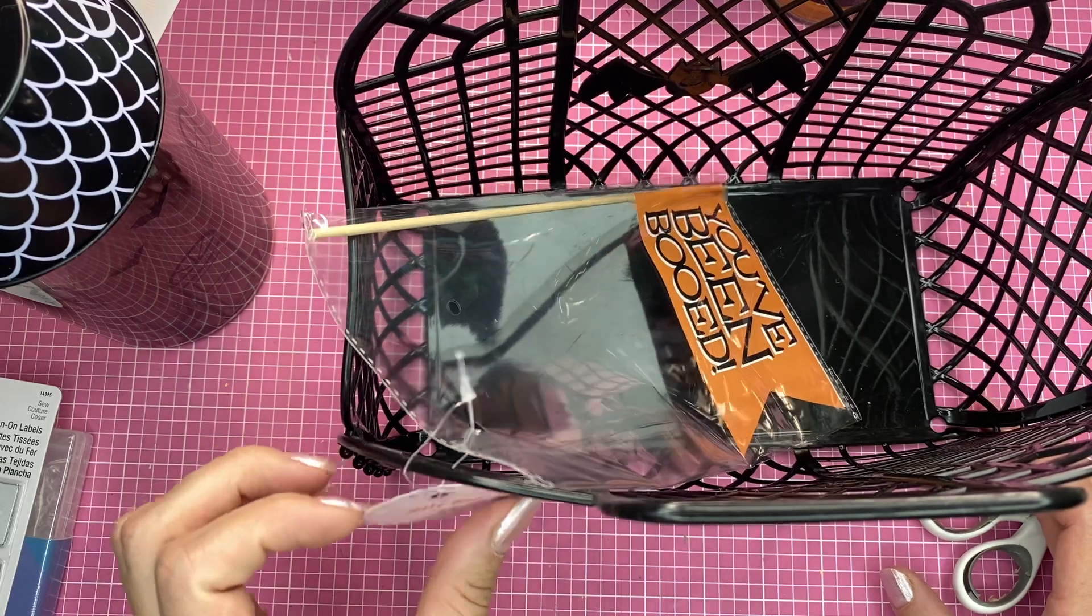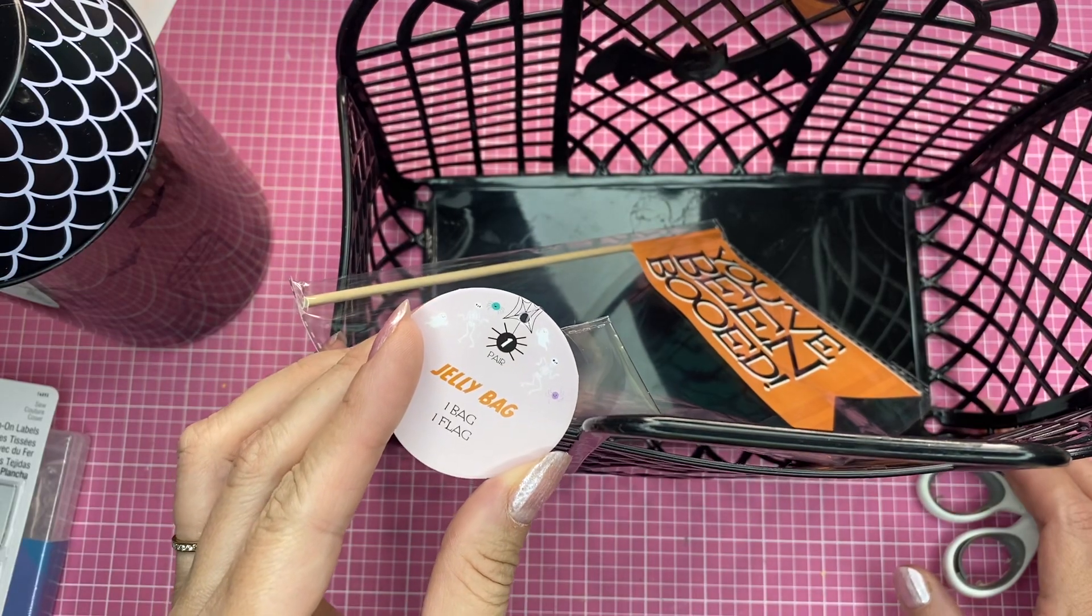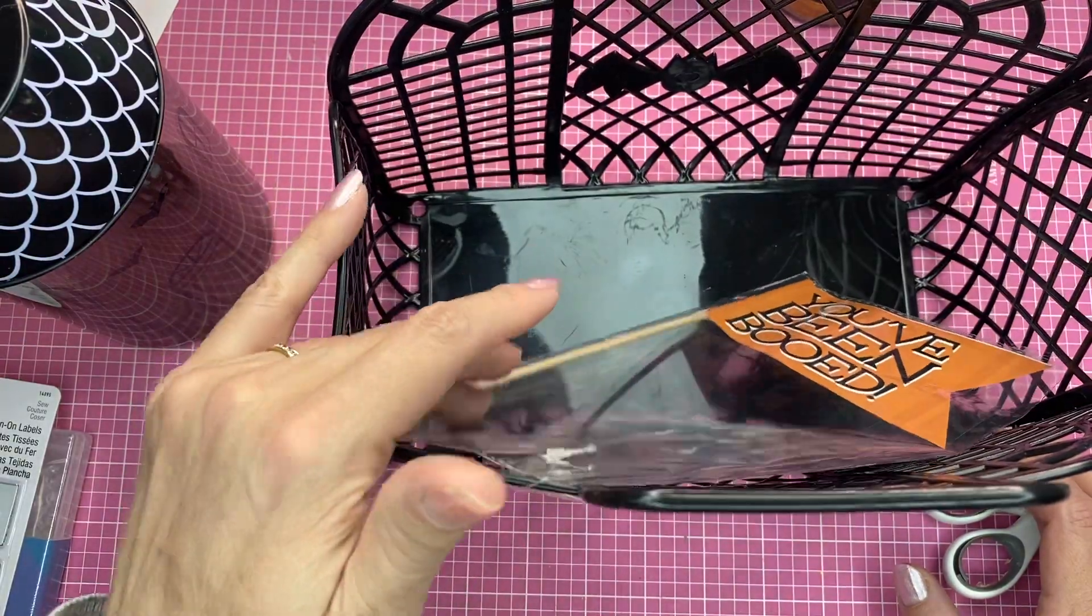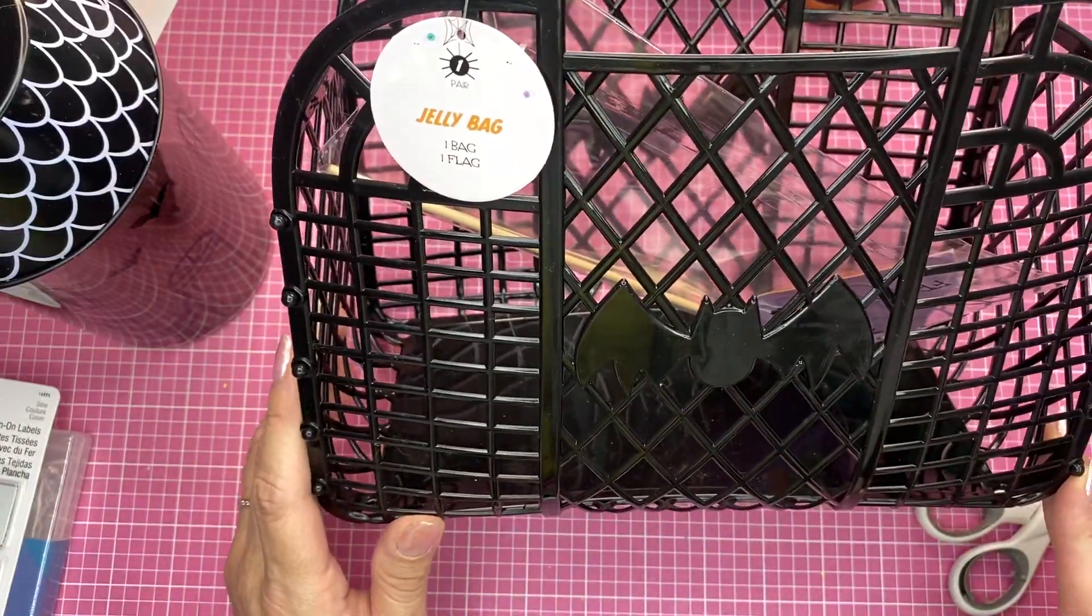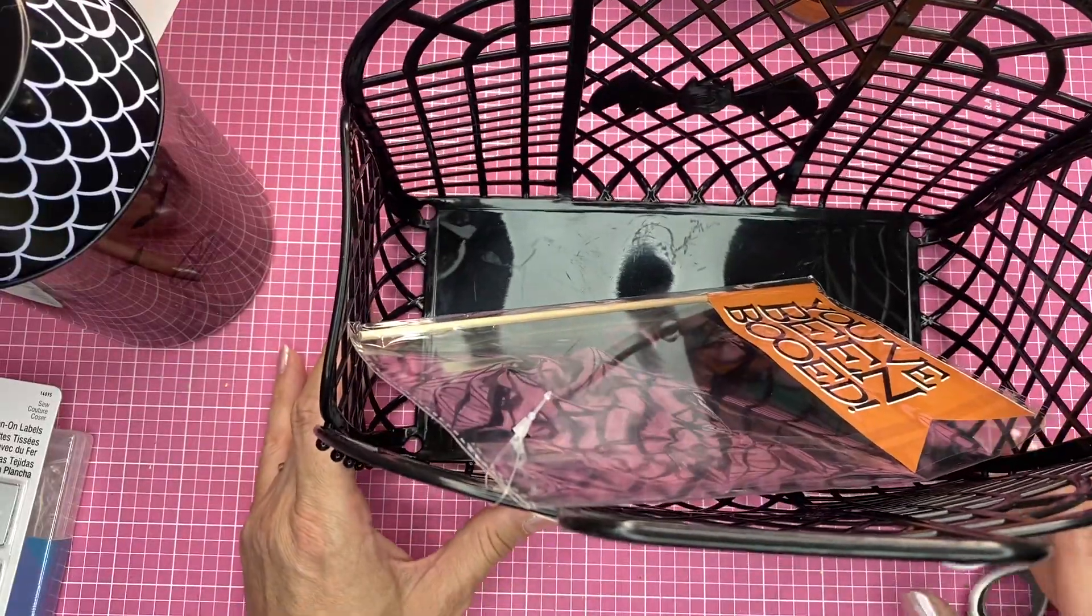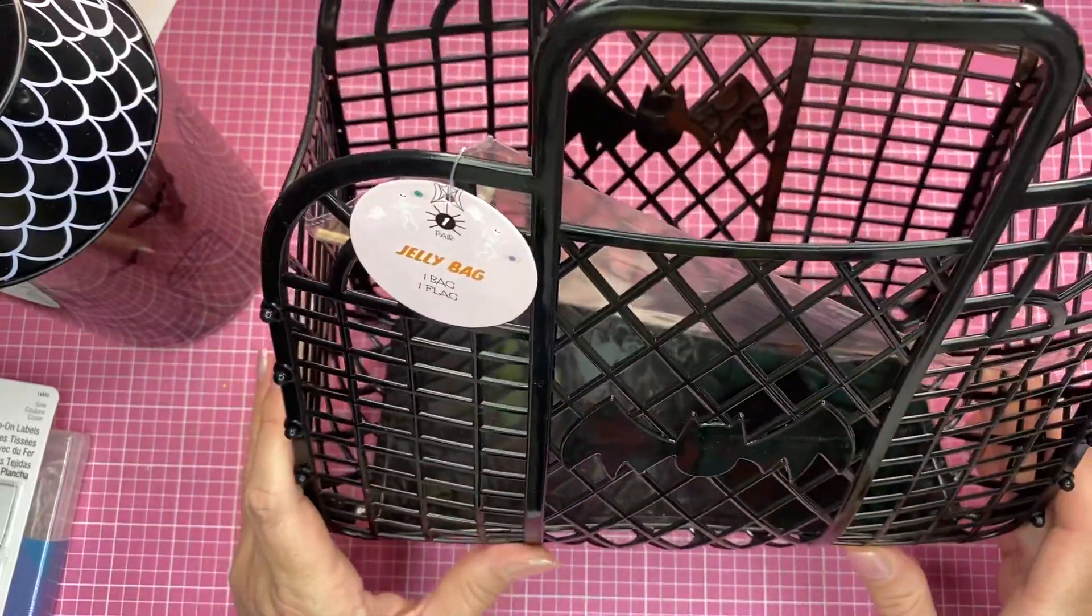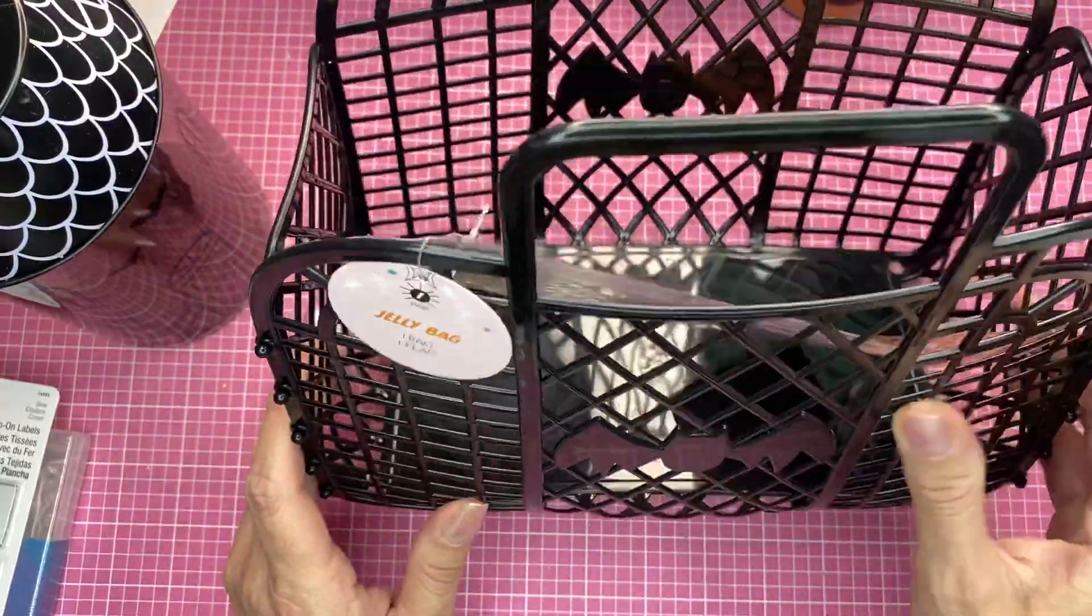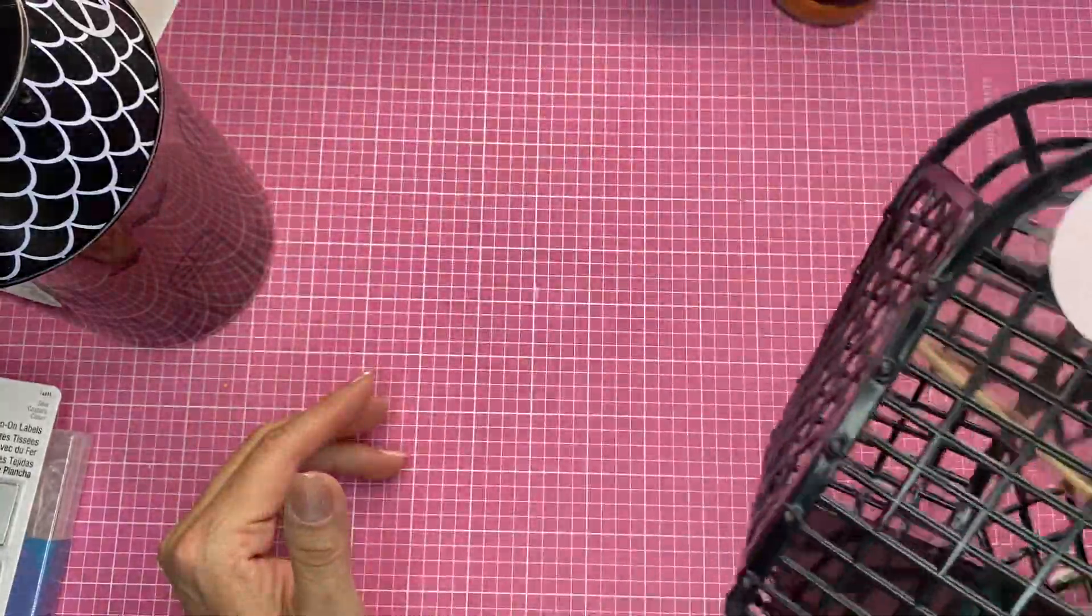So it's a jelly bag, it has one bag and one flag, and this was five dollars also from the Target Dollar Spot. So if you go to Target a lot, you probably saw it and you most definitely grabbed some because they are so amazing. Reminded me of when I was younger, I had one of these in different colors, and I also had some shoes made of the same material when I was really young. I remember.